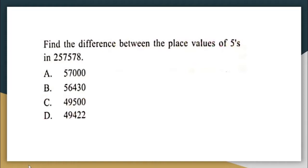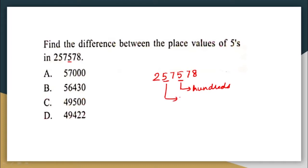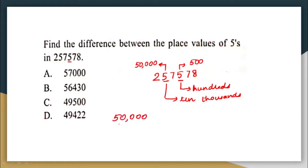Next question: find the difference between the place values of 5 in the number 257,578. Identifying the positions — one 5 is in the hundreds place, so its place value is 500. The other 5 is in the ten-thousands place, so its place value is 50,000.